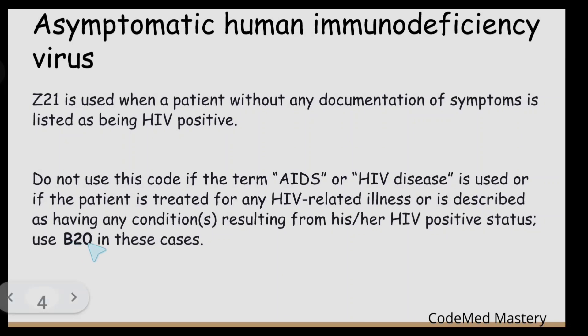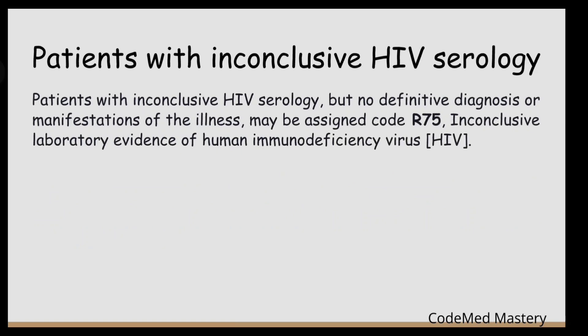If the patient is HIV positive and the term AIDS or HIV disease is used, we use code B20. To summarize: code Z21 is used for an asymptomatic HIV patient without documented symptoms. Code B20 is used when the patient is documented as having AIDS or is being treated for an HIV-related illness.